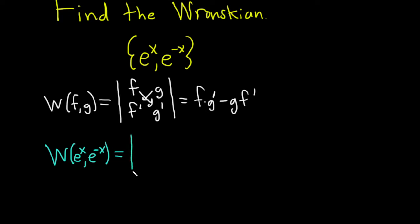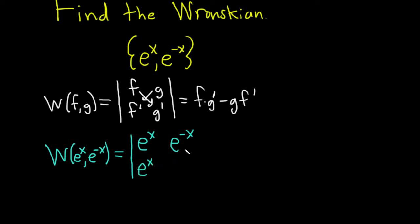This is the determinant where in the first row you just put the functions: e to the x and e to the negative x. Then in the second row you take the derivatives of those functions. The derivative of e to the x is e to the x — that part's easy. Now for the derivative of e to the negative x, you have to use the chain rule, so you take the derivative of the outside, which is e to the x.